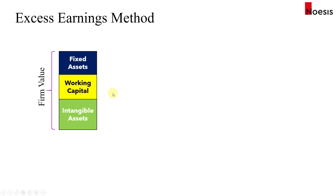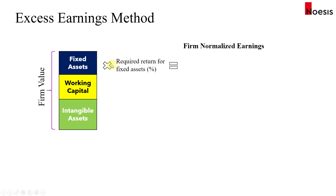What we'll do is start with the firm's normalized earnings — typically the estimated normalized earnings for the coming year. Then we use the required return for fixed assets and working capital to work out the minimum amount in dollar terms needed to compensate for the capital invested in those assets. We multiply the fixed asset value by the required return for fixed assets to get the required earnings to provide that return.